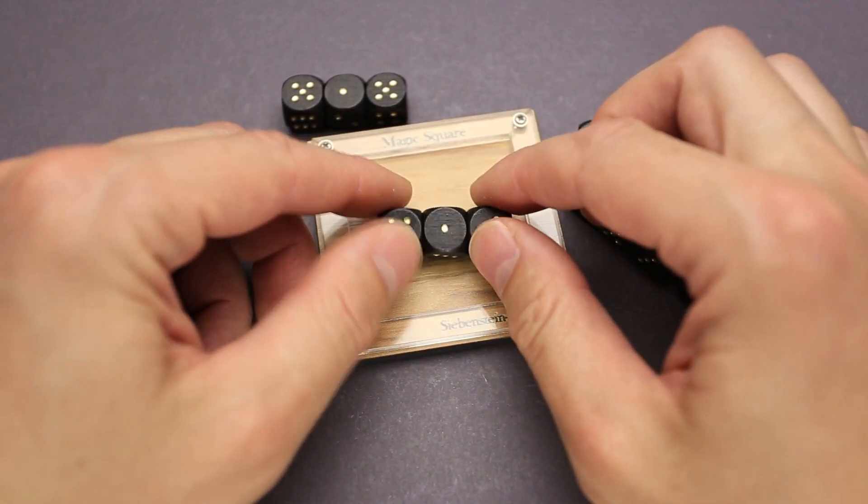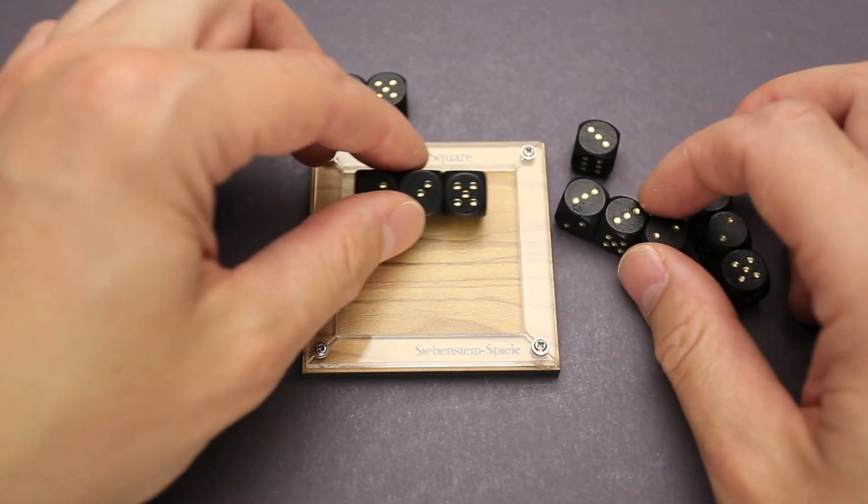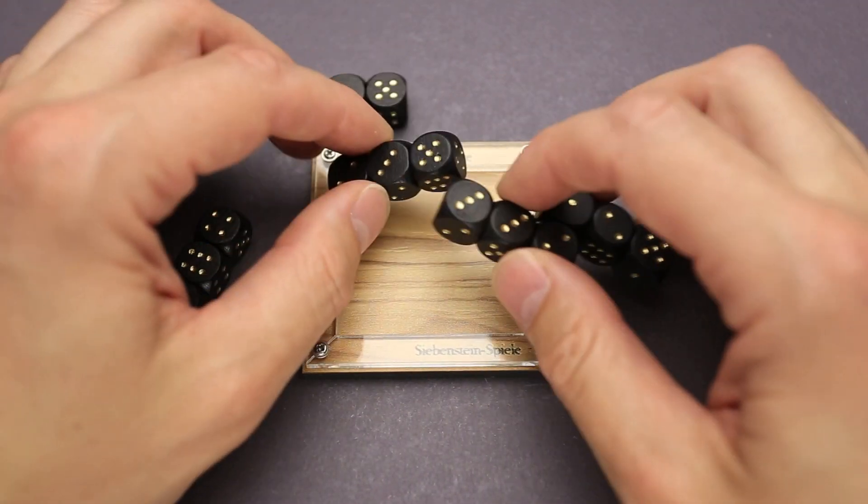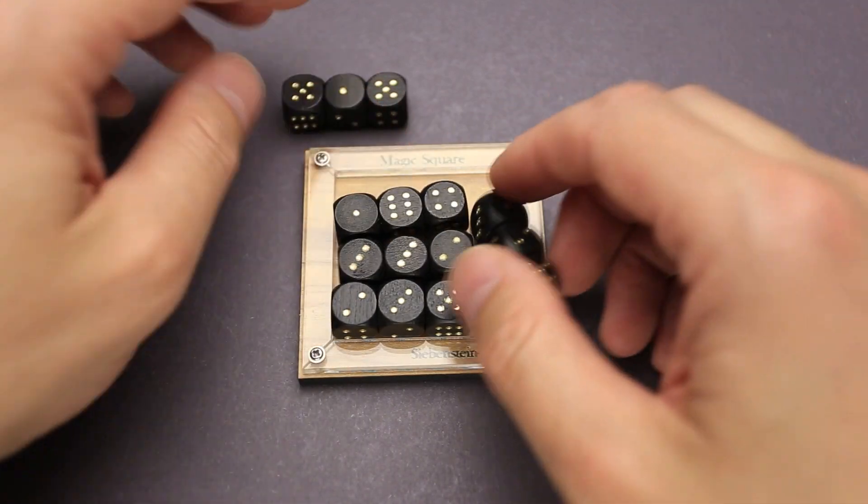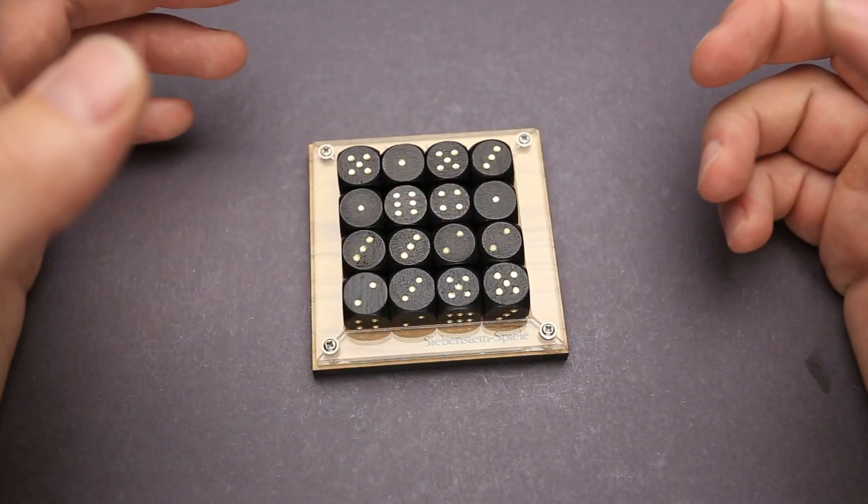That means that you are limited to only four different variations of numbers on each set of dice. And you have to put them in the correct way inside the frame so that you can get the Magic Square.